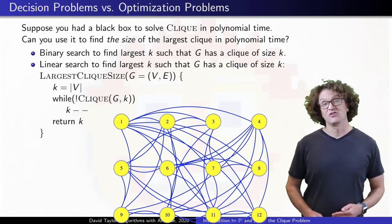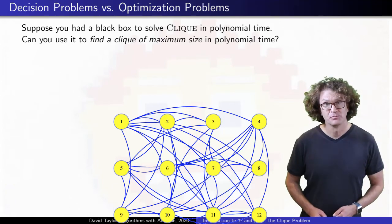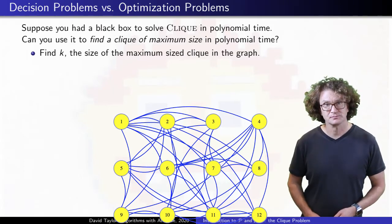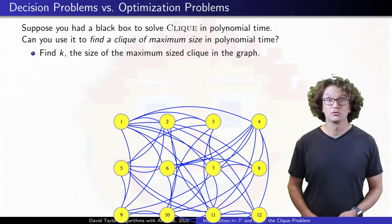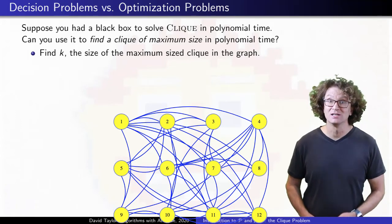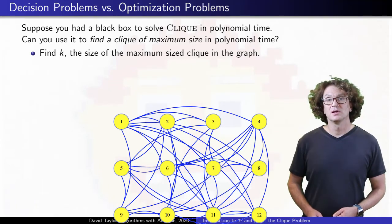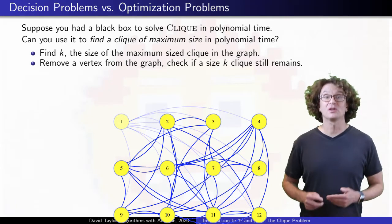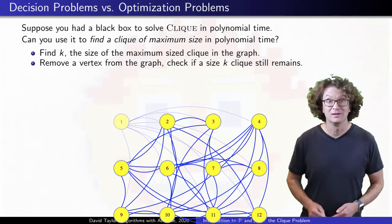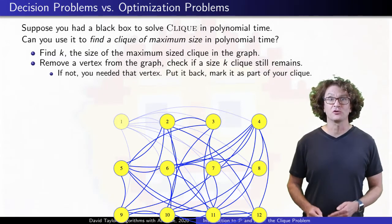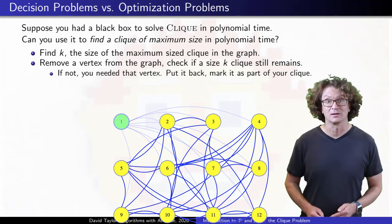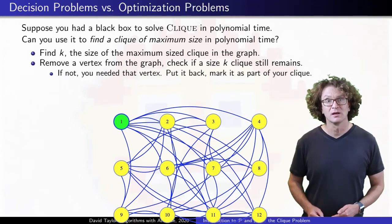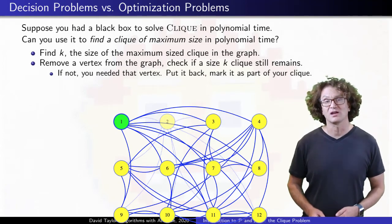But what if you want to actually find a maximum sized clique? Well, first find what the size of the largest clique is. Next, you can go through your vertices one at a time to see if they are needed to make a clique of that size. So maybe I make a new graph with the first vertex removed, and I ask if there is still a clique of that maximum size in the new graph. In this case, there isn't. So I made a mistake, that first vertex is needed in my clique. I go back to the previous graph, marking that the first vertex is definitely in the clique, and then I try removing the second vertex next.